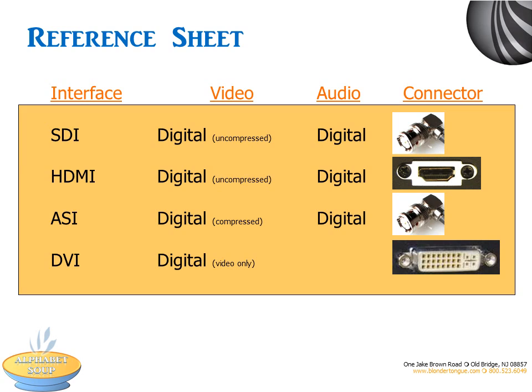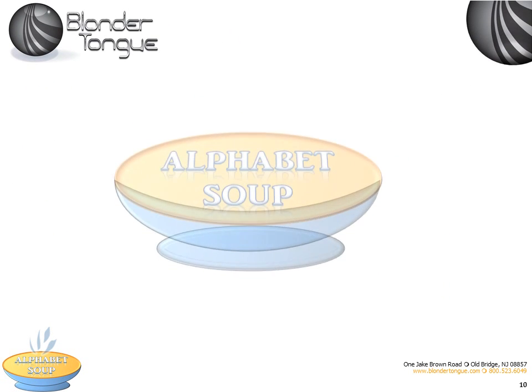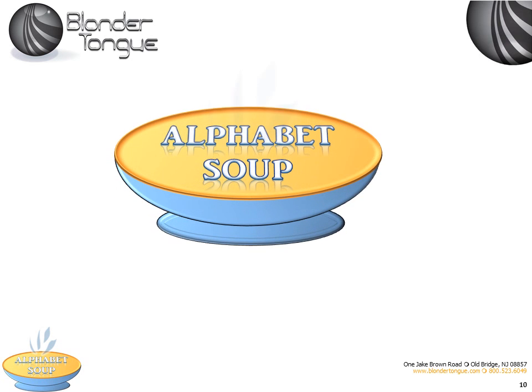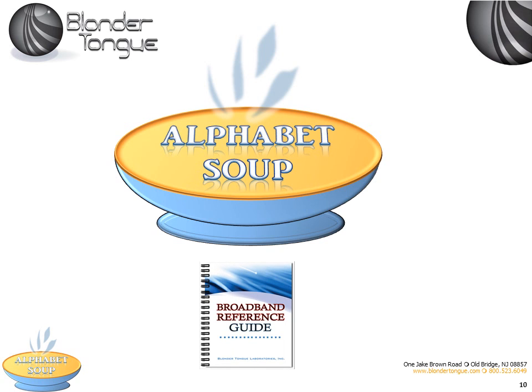Here is a reference sheet you can use to see the interface types and the connectors associated with each. So, as you know, we covered SDI, HDMI, ASI, and DVI. We hope this helped you with the alphabet soup that exists in our industry. Please see the support section of the Blondertongue website for more resources. In particular, a lookup summary of the various acronyms included here can be found in the Blondertongue reference guide. You can also request a hard copy of this pocket guide on the Publication and Request to Catalog page under the Support tab.